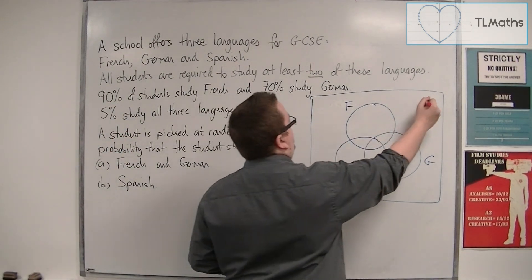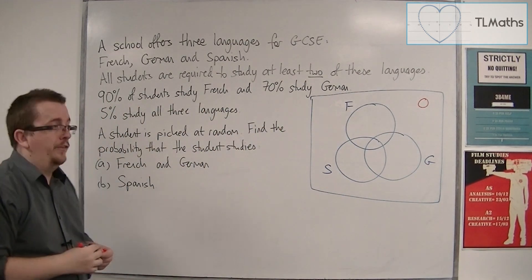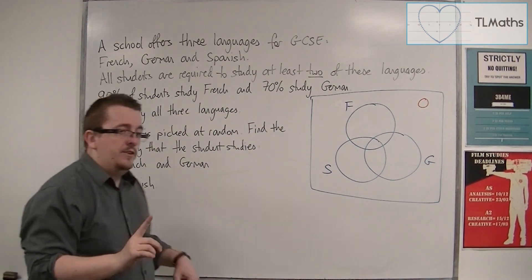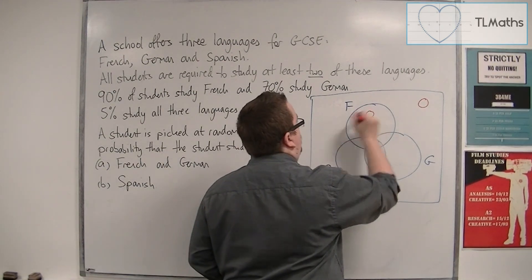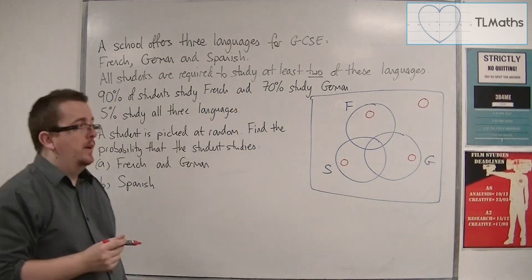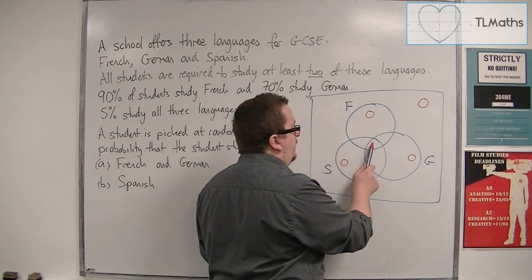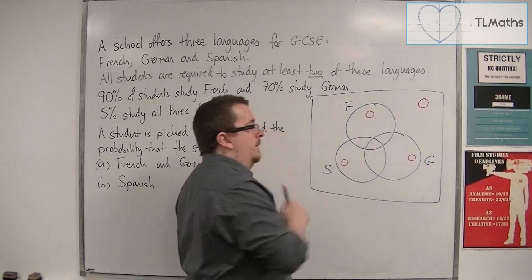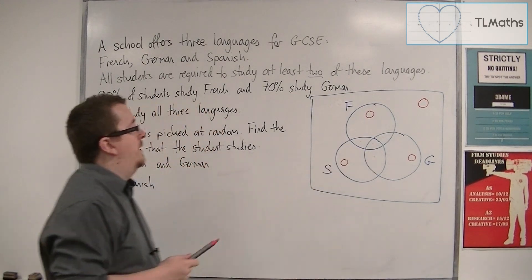anything outside of the three circles to start off with. And we could not have someone just studying French or Spanish or just German. And so the only four boxes or bits that the Venn Diagram will have actual numbers to go in are those four there.